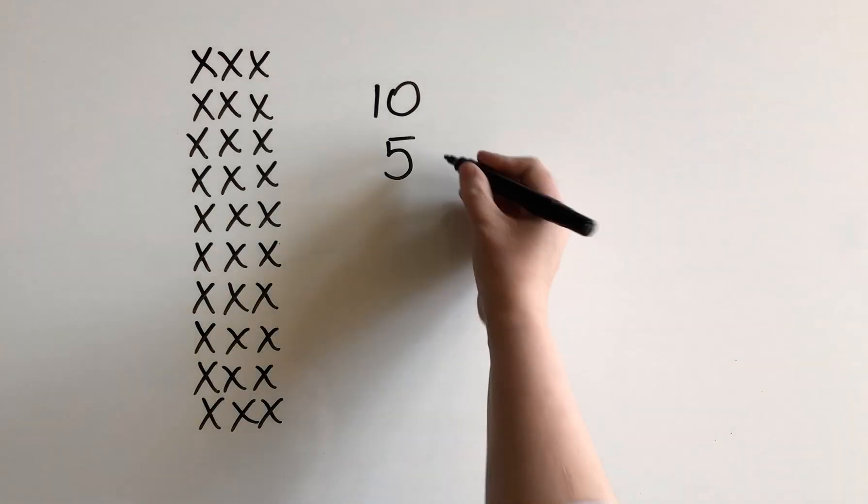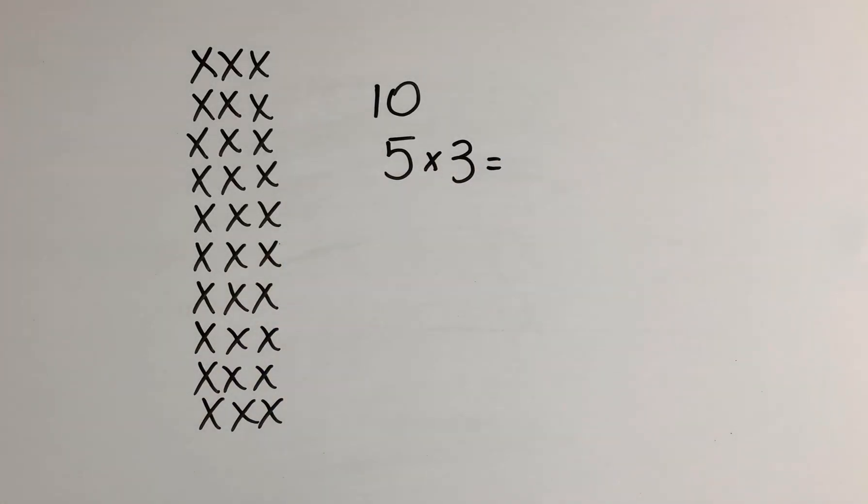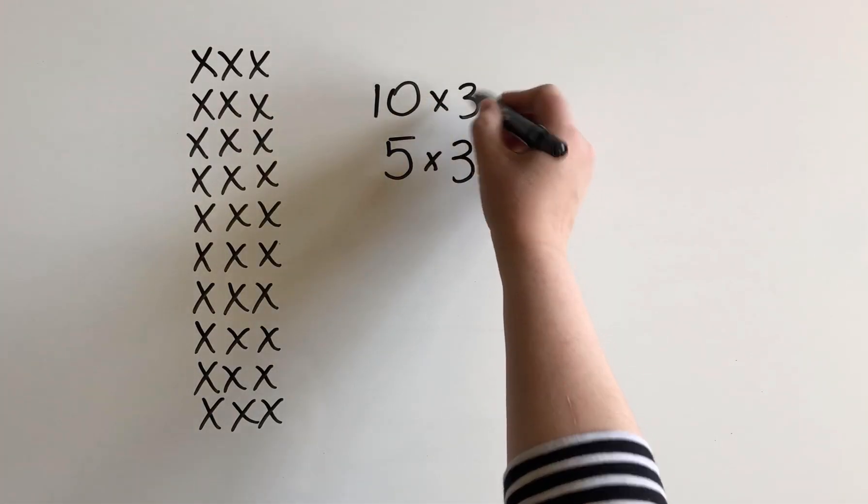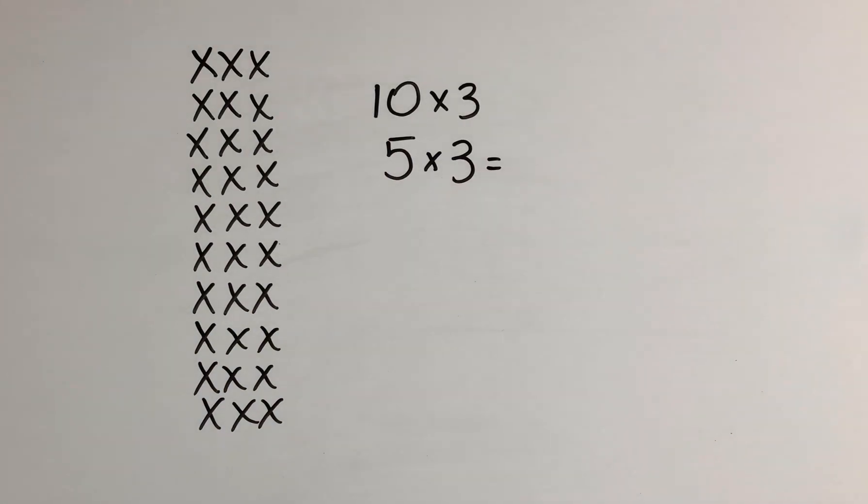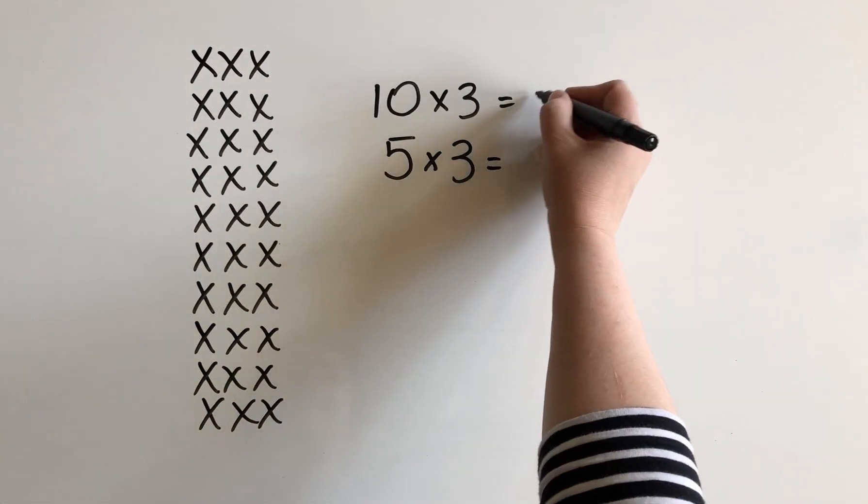So let's say that we wanted to solve 5 times 3. Now here's one way that we could do this. We could start by asking ourselves, what would 10 times 3 be? Because 10 is a pretty easy number to multiply by. So if I'm multiplying 10 times 3, I'm going to get 30.